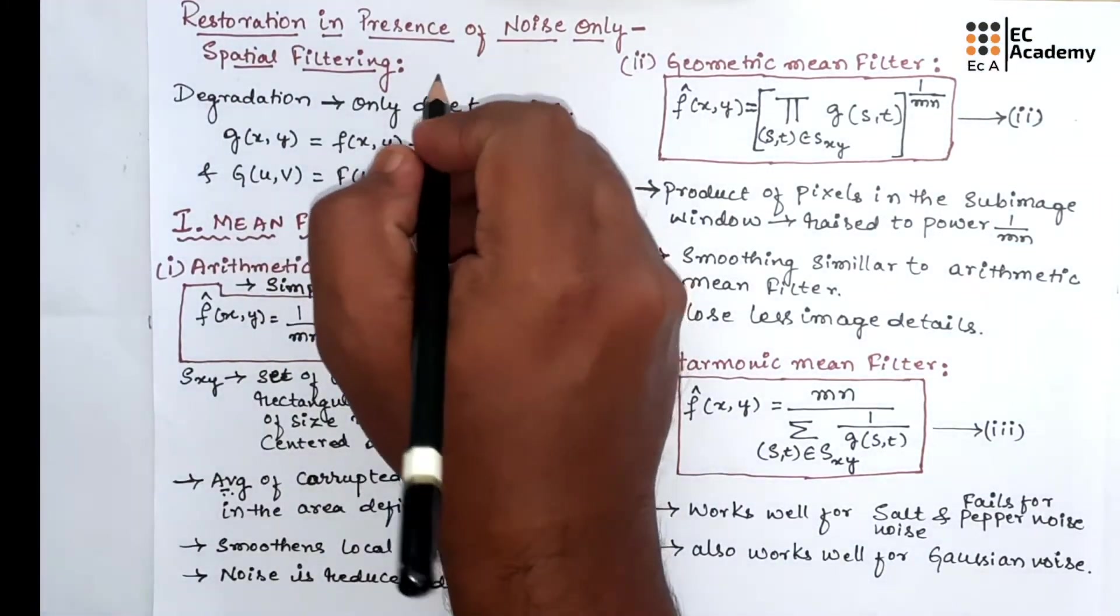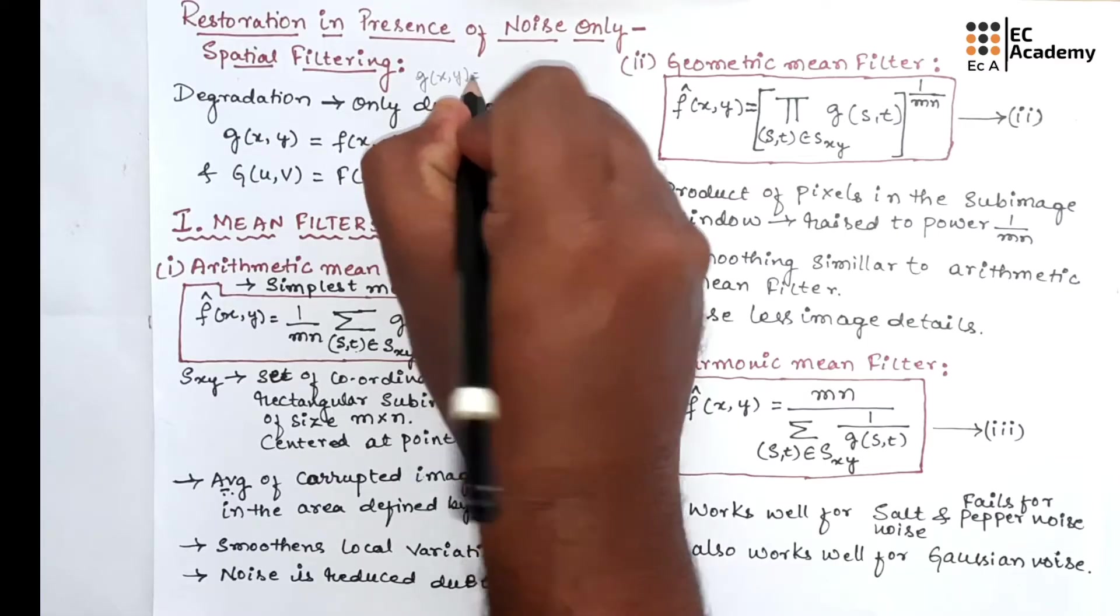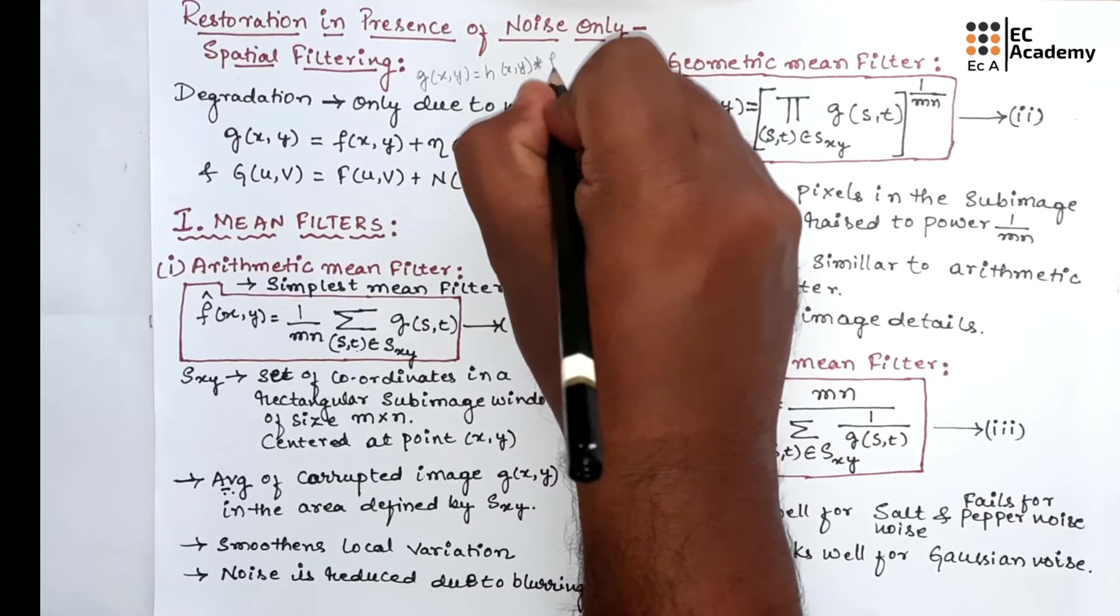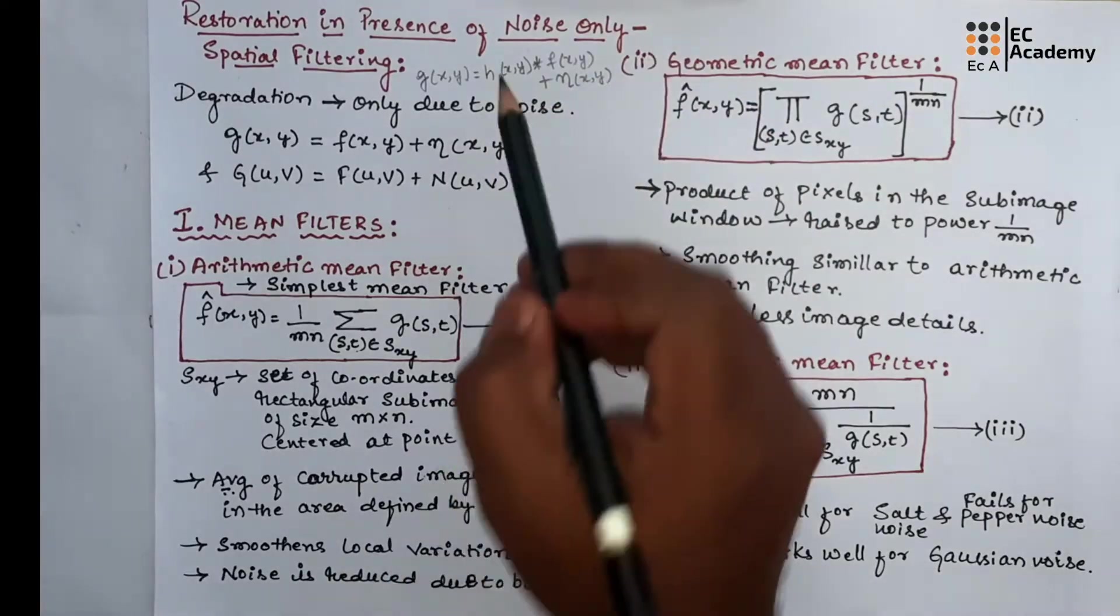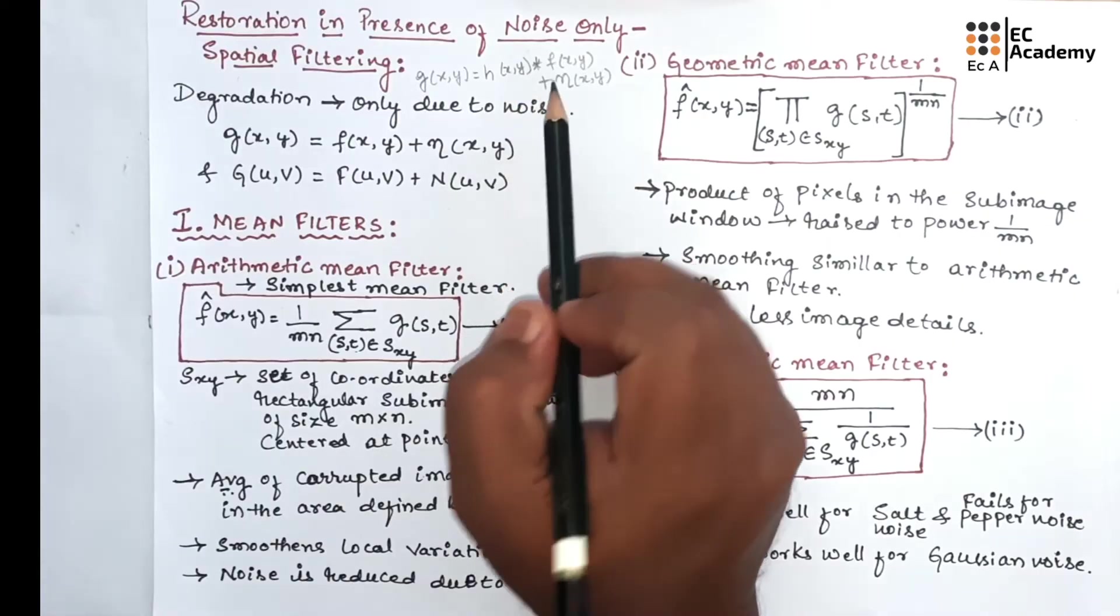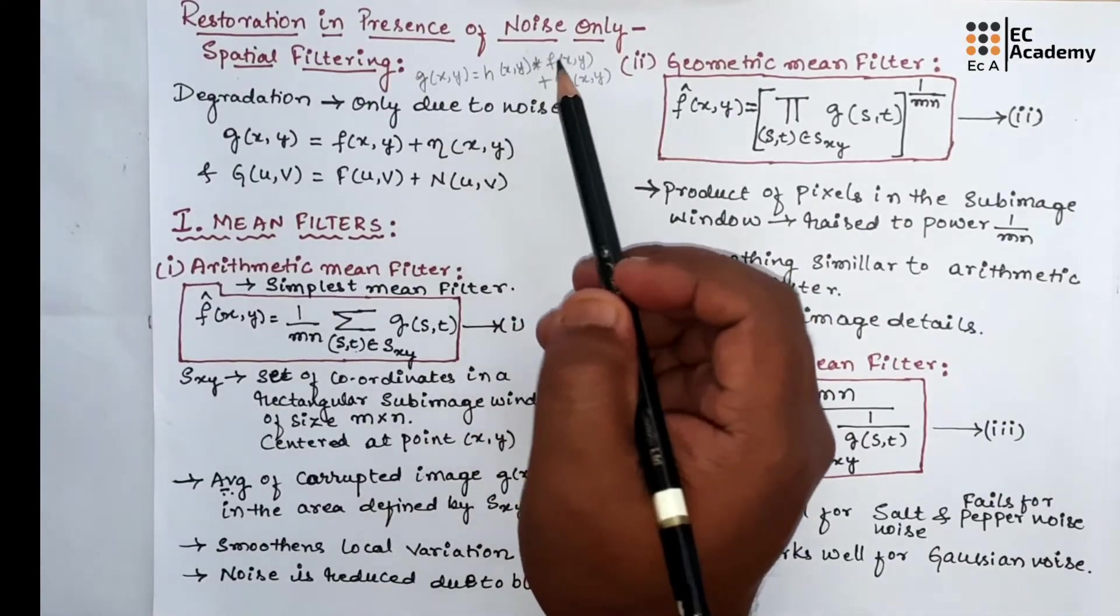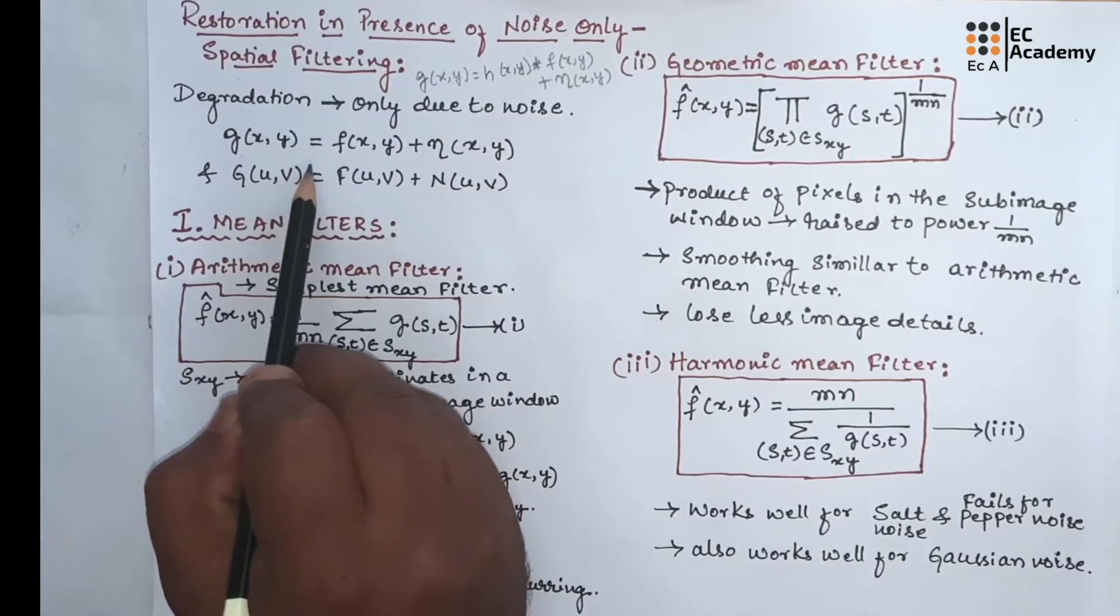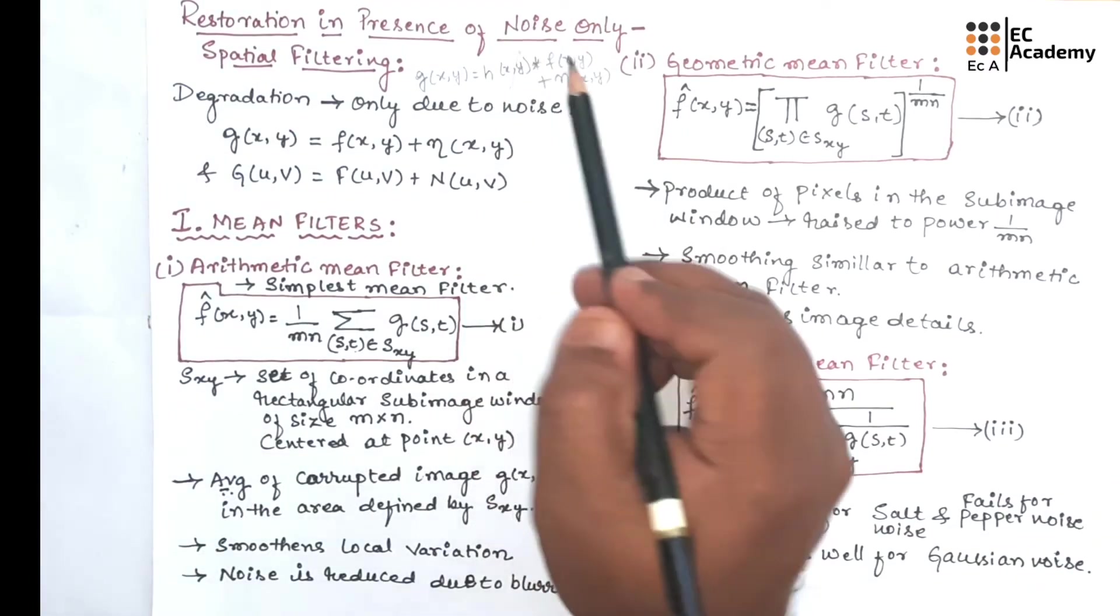In our previous lecture, we understood that the degradation image can be given as G(x,y) = H(x,y) convoluted with F(x,y) + N(x,y). Here, H(x,y) is the spatial representation of degradation function. If we take the degradation of image is happening only because of the noise, at that case we will write the equation as G(x,y) = F(x,y) + N(x,y). So we will not consider this term.